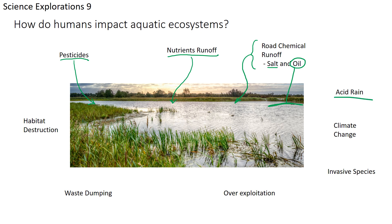Power production from burning coal or some forms of natural gas can cause acid rain. This acid rain can be as acidic as Coca-Cola. When it enters the water, it changes the pH and causes serious harm to fish gills and insect gills, creating significant damage to aquatic ecosystems.